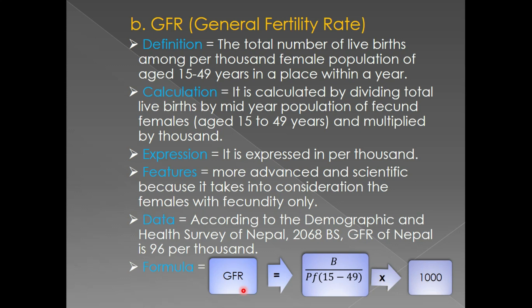CBR is equal to B divided by P, multiplied by 1000. So in CBR we take total live births divided by mid-year population, multiplied by 1000. But the difference here is that in GFR we don't take only mid-year population in the denominator — we take the mid-year population of females, specifically the age-specific mid-year population of females who are between 15 to 49 years, meaning those who have the capacity to give birth.